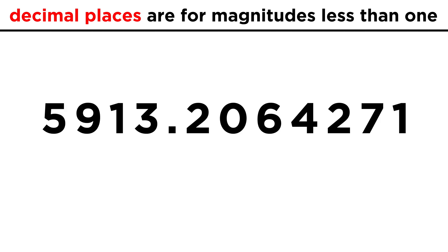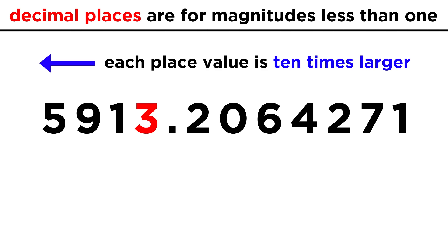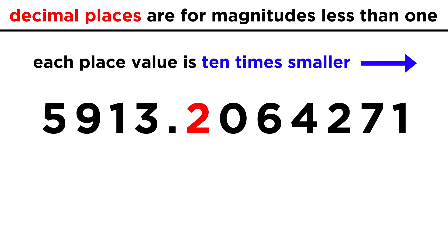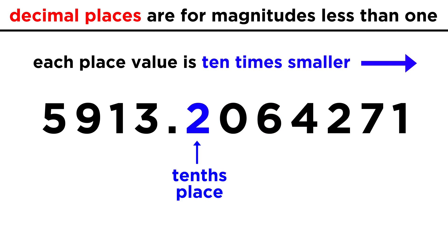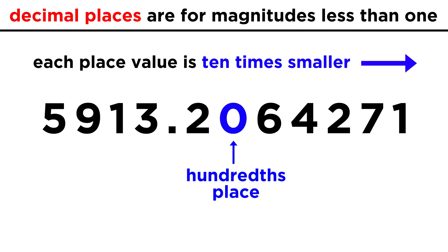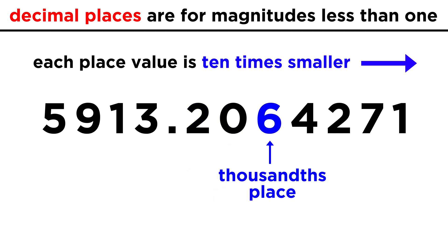The place values to the right of the decimal work just like the regular ones, in that as we go to the left, each place value is ten times greater than the previous, while as we go to the right, each place value is ten times smaller. So after the tenths place, we get the hundredths place, thousandths place, and so forth.